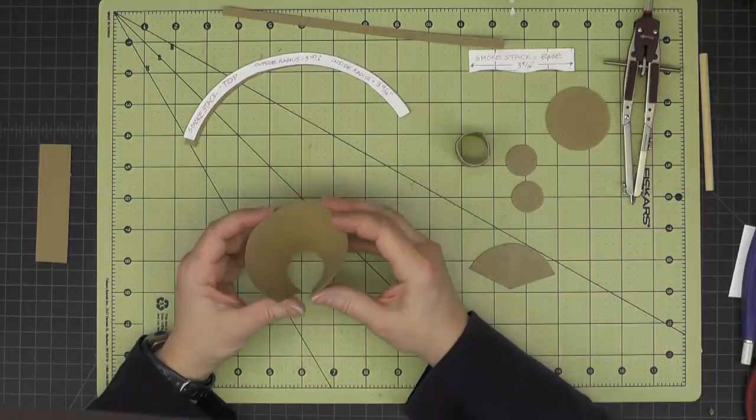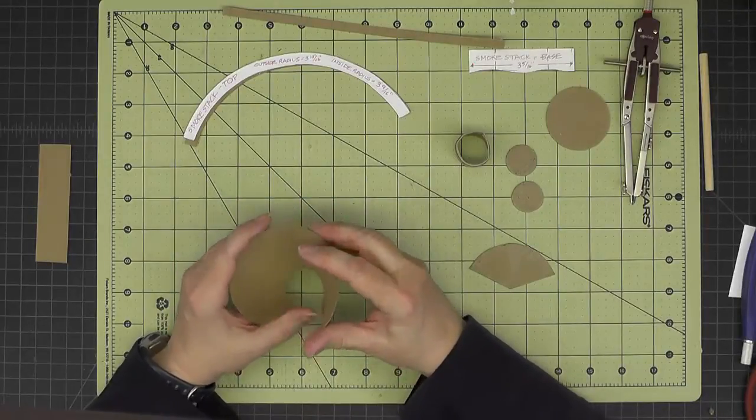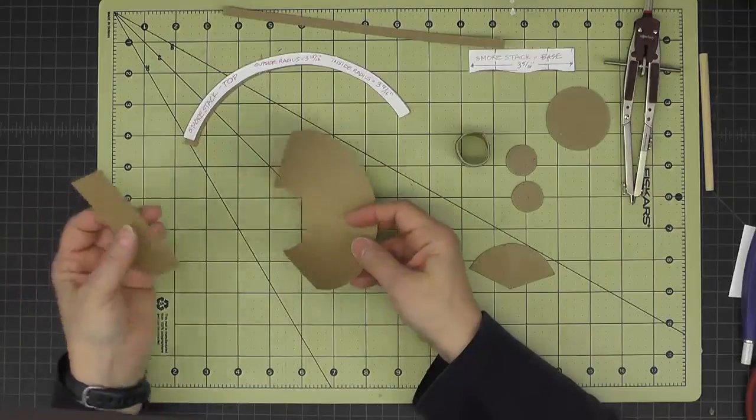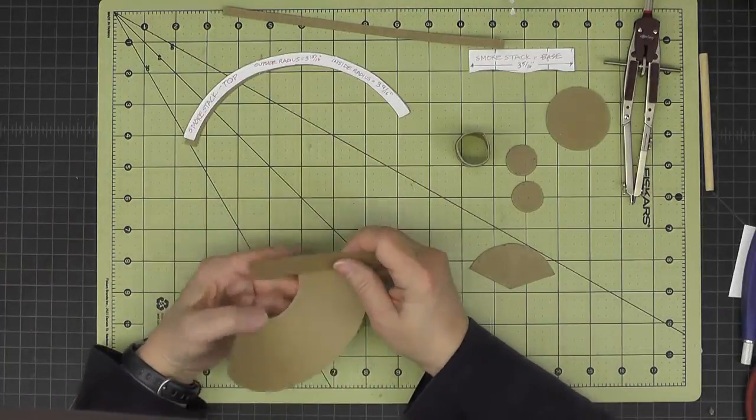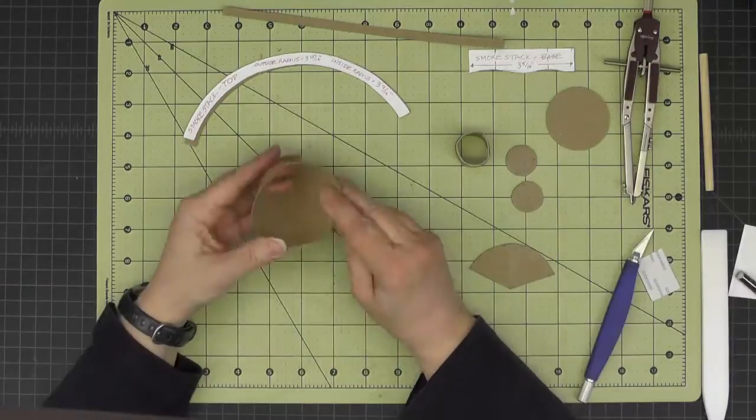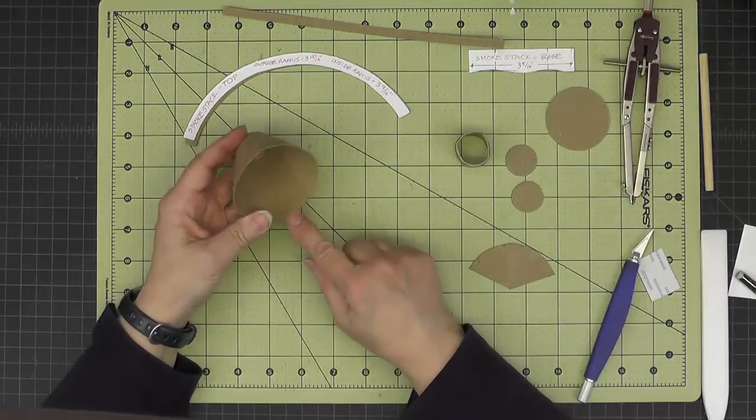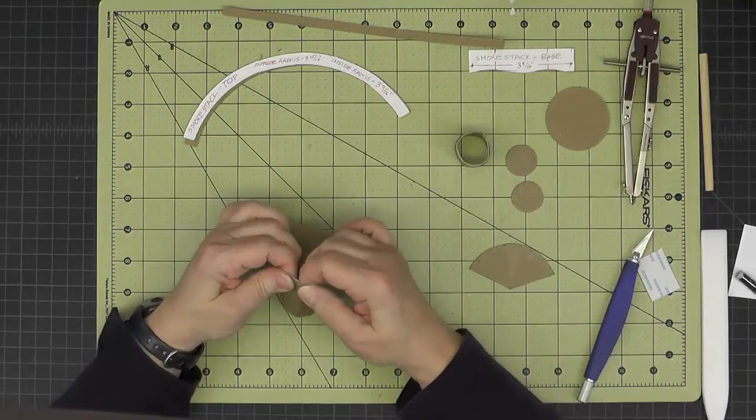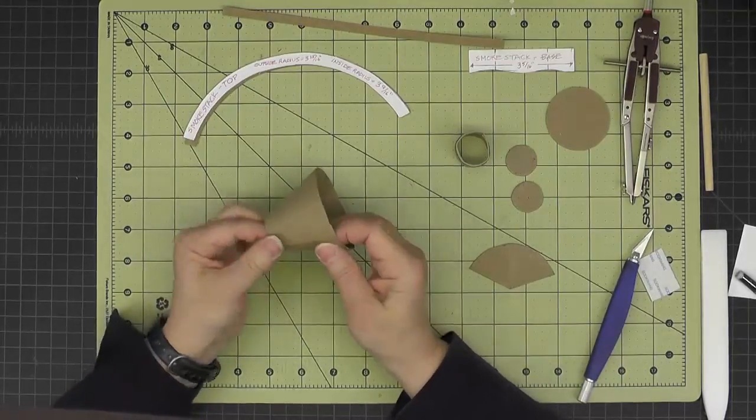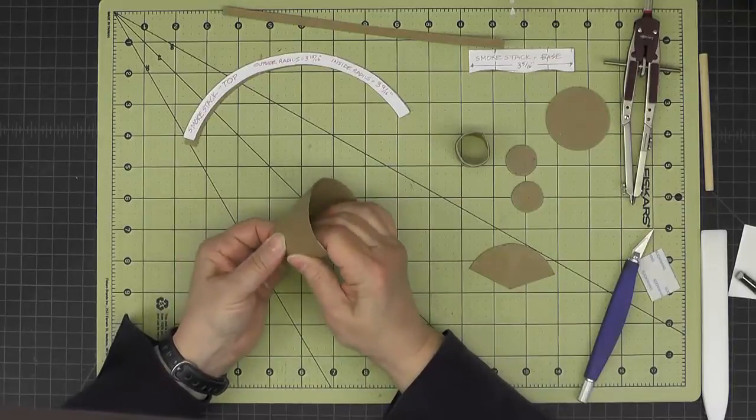And once you have it wanting to curve nicely, go ahead and use another piece of this one-inch cardstock and make the join here. Make sure you give this join a really good burnish. And then just take a minute to work in a curvature where that join is.